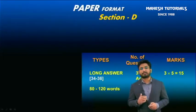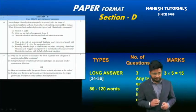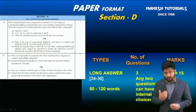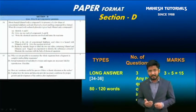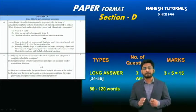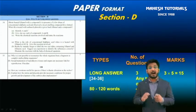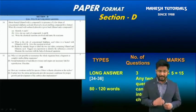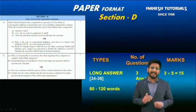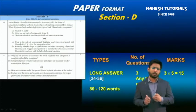Section D has three questions and any two questions can have internal choices. Each question carries five marks weightage, making up a total of 15 marks. These are long answer questions, meaning you are supposed to write 80 to 120 words — that would mean 10 to 12 points.